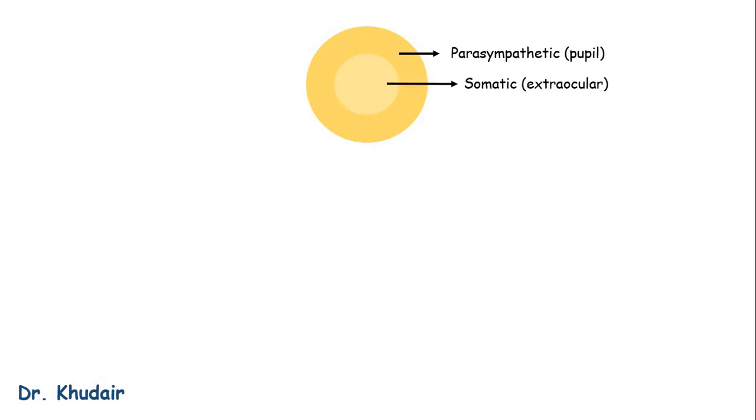Whereas the somatic fibers are located deep inside the nerve, and they control the extraocular muscles.